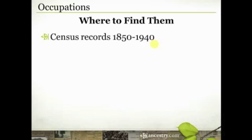Earlier censuses — 1850, 60, 70, 80 — just list an occupation. Starting in 1900, it also lists an industry or business they were engaged in. So they weren't just a farmer; maybe they owned the farm or worked for a specific company. We'll see a couple of examples of that a little bit later.